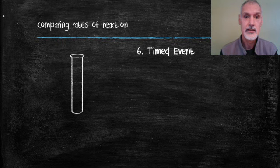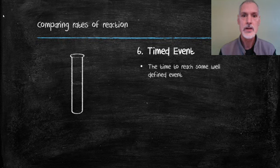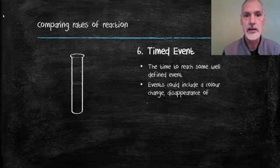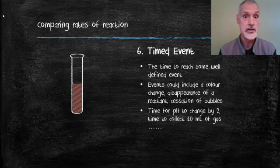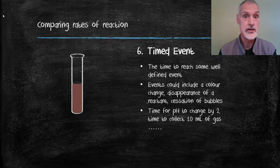Lastly I can use what's called a timed event. Some reactions have a particularly marked sign when the reaction is complete. Perhaps it changes color, perhaps you can no longer see a piece of metal that was placed in the solution. You might define the timed event as the time to collect 10 milliliters. If I use the example that I have over here and I start the reaction off and in three seconds it changes color, the rate of my reaction would be one over the time, or one over three seconds. That's how I would determine the rate.